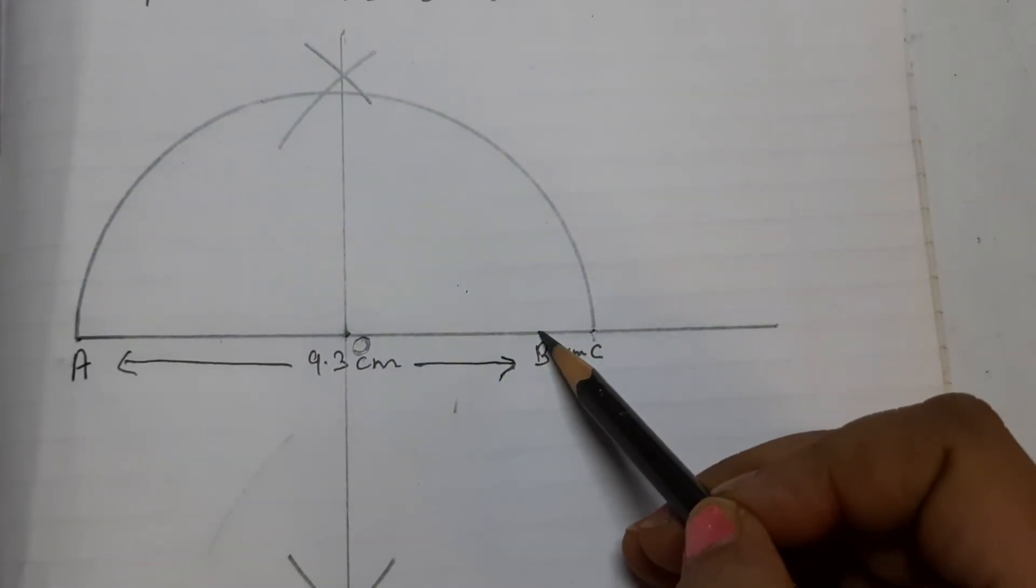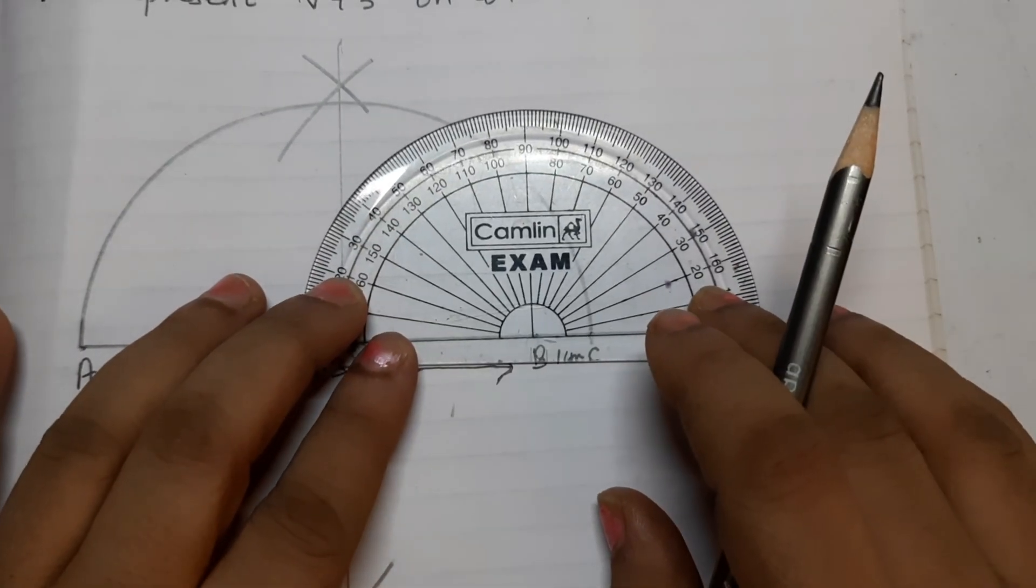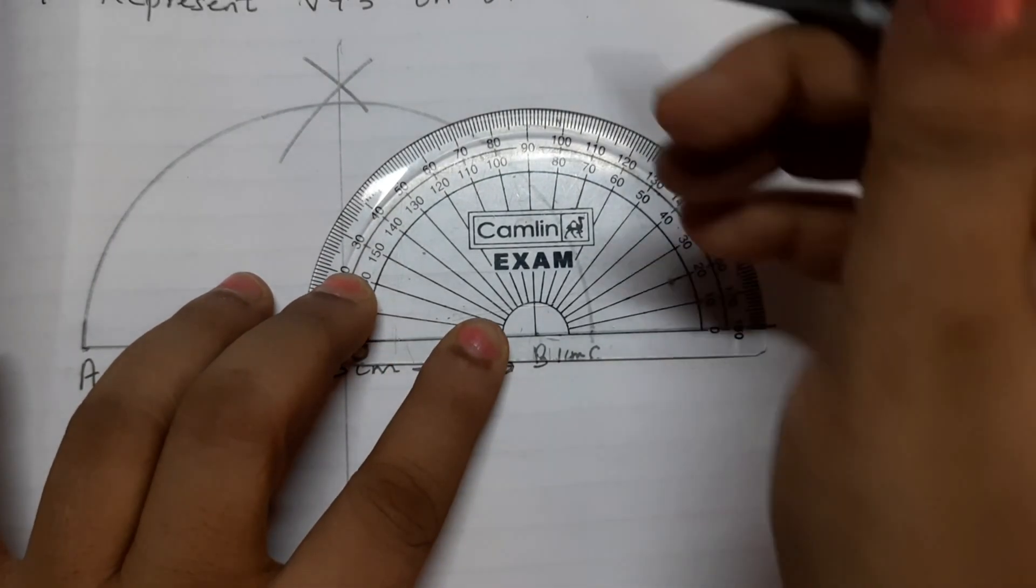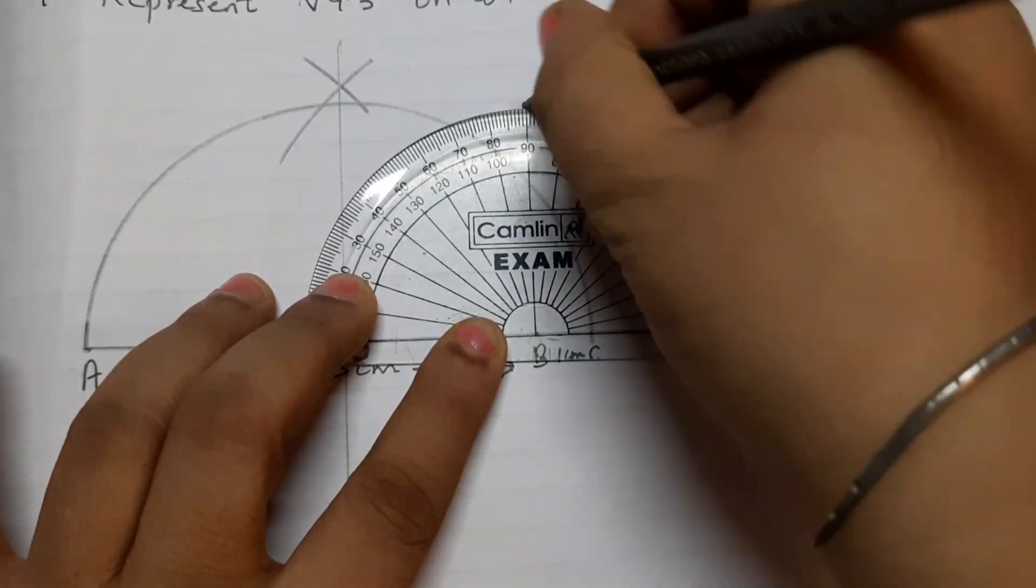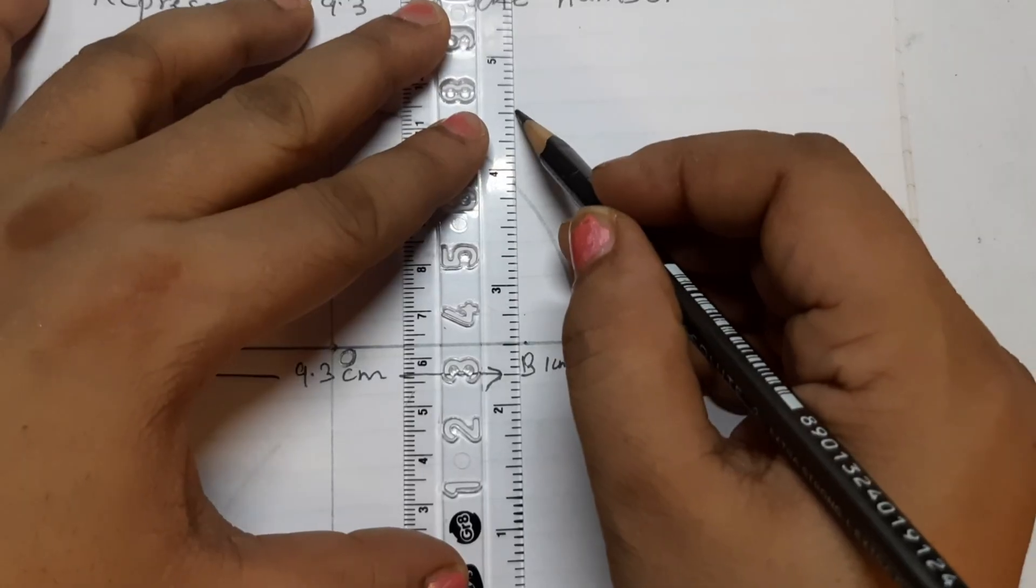At B, draw a perpendicular. I am using a protractor, you may use a compass or a protractor. Keep the center here and we want a perpendicular, 90 degrees, join these two points.